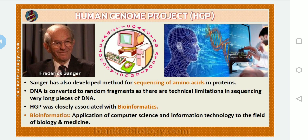Frederick Sanger developed a method of sequencing of amino acids in proteins. He proved that DNA needs to be converted to random fragments due to technical limitations in sequencing very long pieces of DNA. The HGP was closely associated with bioinformatics, which is the application of computer science and information technology to the field of biology and medicine.